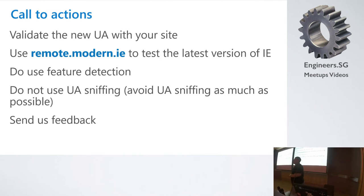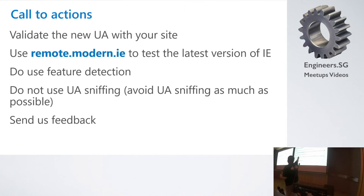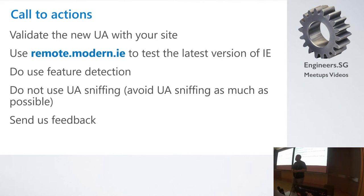I need your help because you're experts — influencers in JavaScript and HTML. For example: do not use UA sniffing. Don't detect Edge, no need. Some websites in Singapore are already detecting if IE equals Edge — there's no need for that.